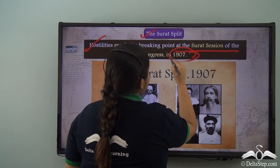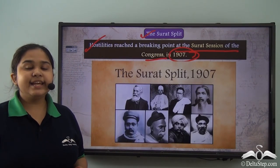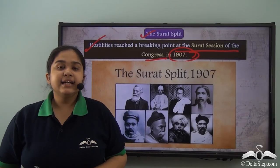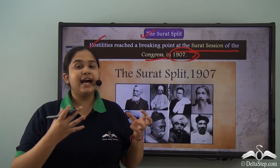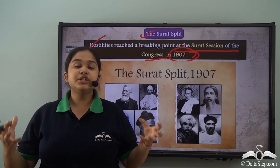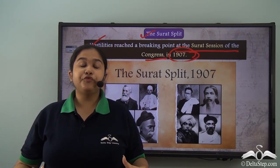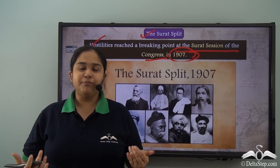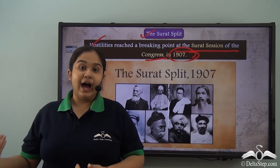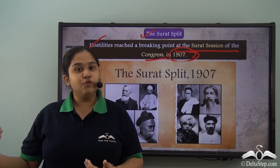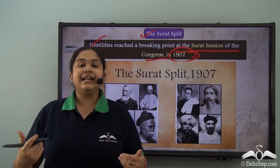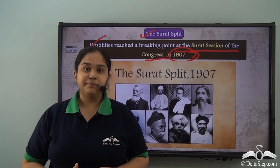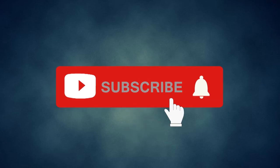At the Surat session of 1907, the moderates and extremists split into different factions of the Indian National Congress. Both the early nationalists and the radicals had created a national fervor and framework for the growing nationalist movement, developing it in a way that would take it to new heights — finally reaching the mass phase or Gandhian era, led by Gandhi, who would take India to her days of independence.